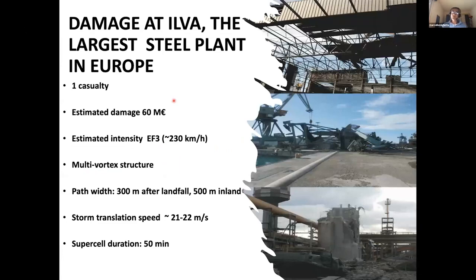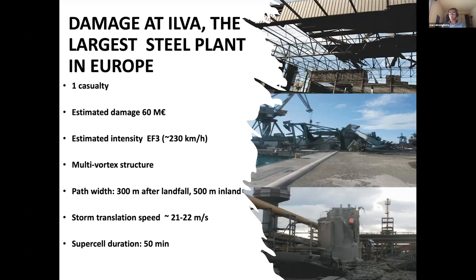Some images on the right show the intensity of the event, with a crane that fell down and a concrete chimney that was completely destroyed. The damages were really relevant, estimated at about 60 million euros, and unfortunately there was one casualty. Estimated intensity was about 220 kilometers per hour. The peculiarity of this event, compared to other Italian events, is the multivortex structure. The diameter was about 300 meters after landfall and increased to 500 meters inland, with a very intense translational speed of about 21 to 22 meters per second. The supercell lasted for almost one hour.